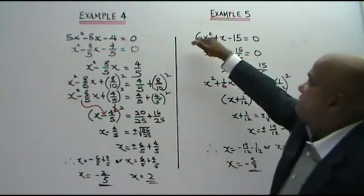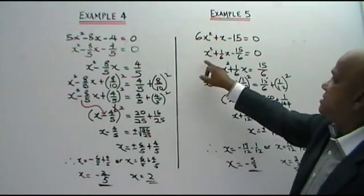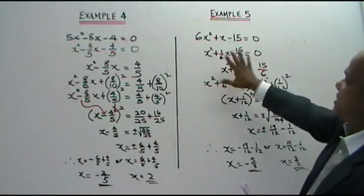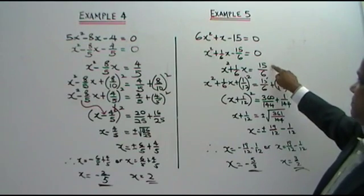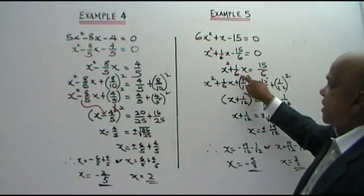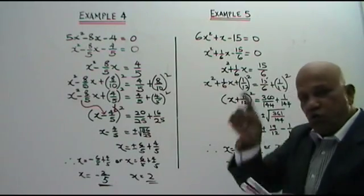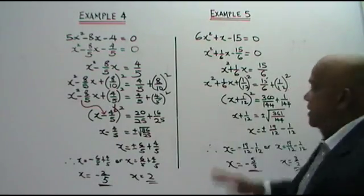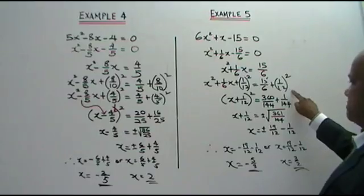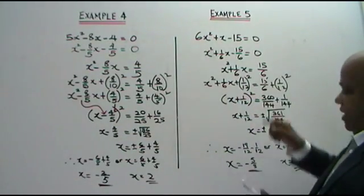Step number 1: divide all the terms by 6. This is what you get. Negative 15 over 6, bring it to the other side — you get 15 over 6. Now, you take the 1 over 6, divide it by 2, square it, and add to both sides. This is what you get. Now we have completed the square here.